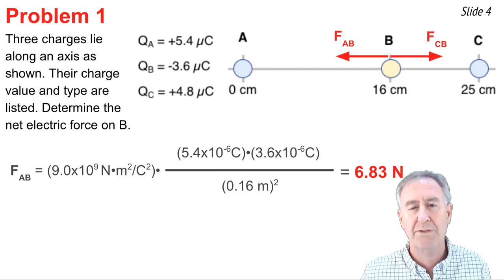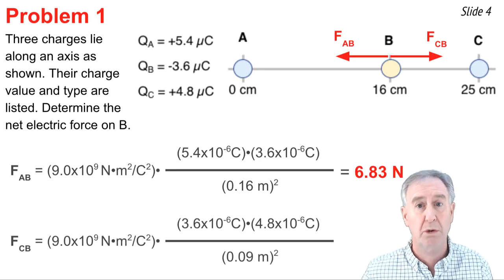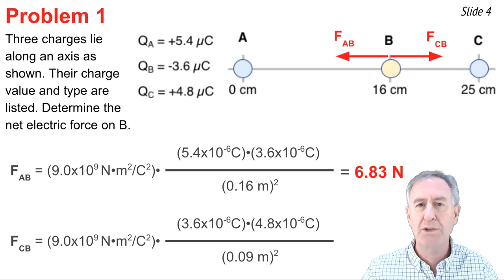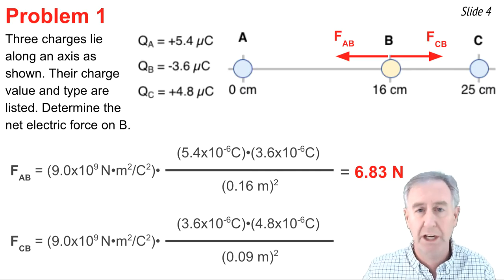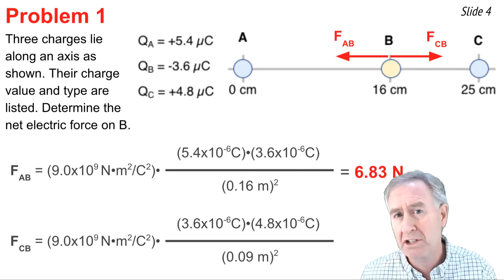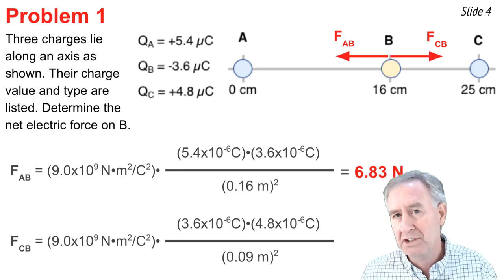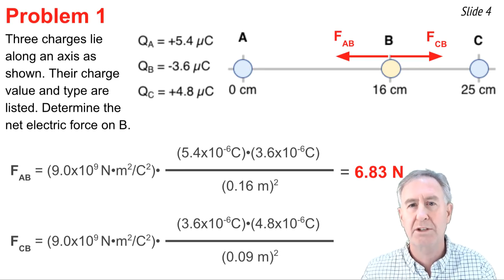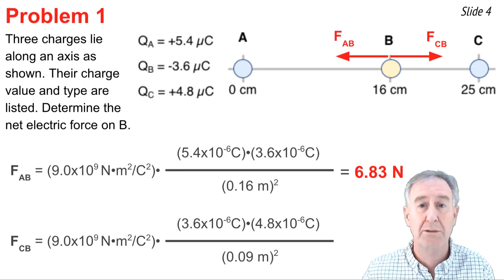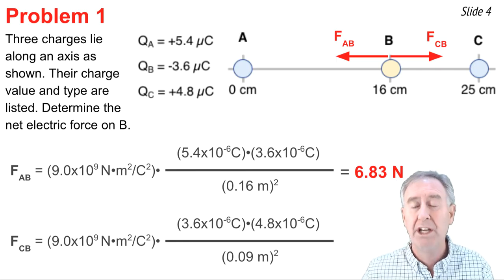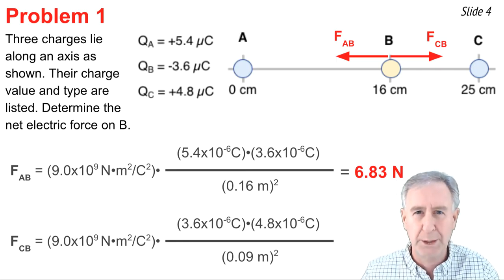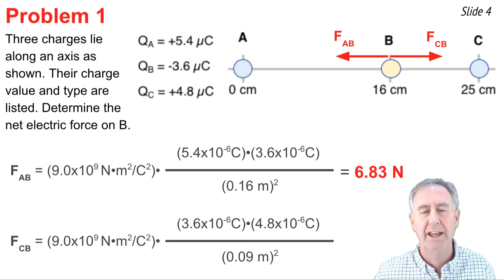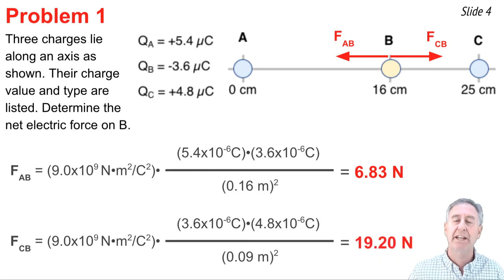I can repeat the process for the force of C on B pulling B to the right. I use the quantity of charge on C, the quantity of charge on B, and I use the distance in between them. Now that's a little subtle. C is at 25 centimeters, B at 16 centimeters, so they're 9 centimeters apart. So the denominator is 9 centimeters, really 0.09 meters and I'm squaring it. Now I get my calculator out and find out what that is. It's 19.20 Newtons.